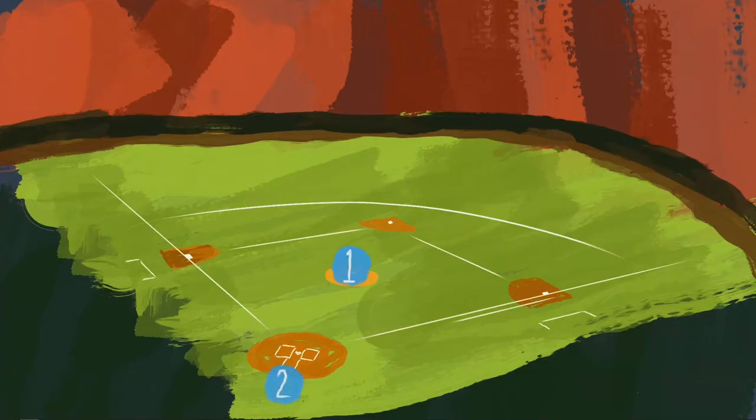So the pitcher is 1, the catcher is 2. In the infield, it goes right to left, kind of. So the first baseman is 3, the second baseman is 4, the third baseman is 5, and then back to the shortstop, who is 6.